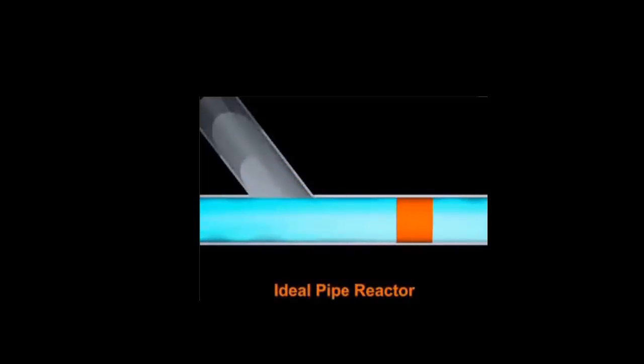If we inject a plug of reactant into the pipe reactor, the plug stays together. In real pipe flow, there may be some back mixing depending on the conditions.